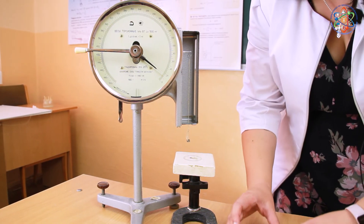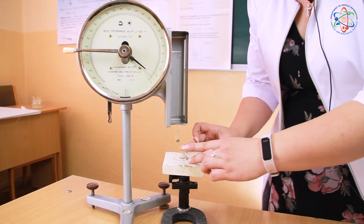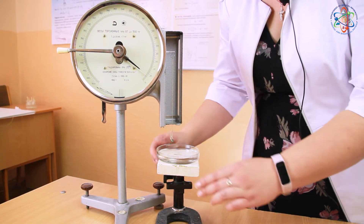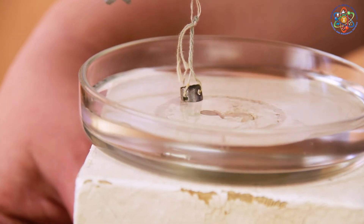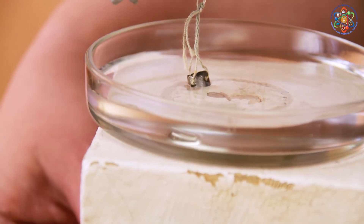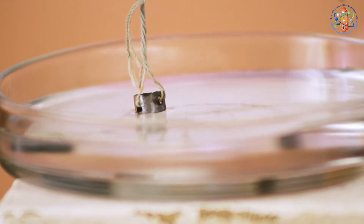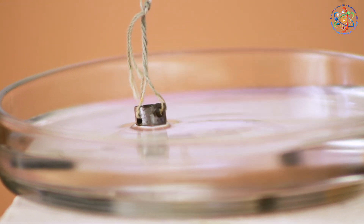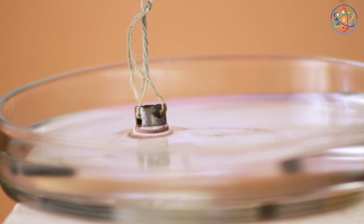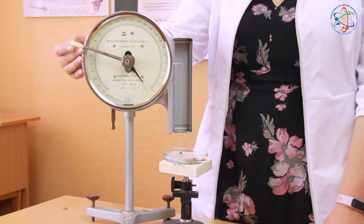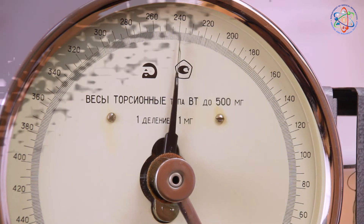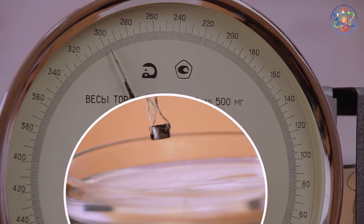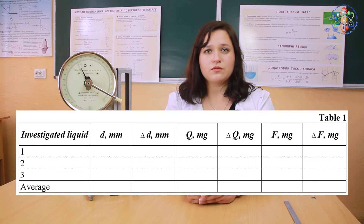After that, we place the cup with the study liquid on the moving platform. Slowly turning the screw, we dip the ring into the liquid. Next, we slowly lower the platform until the moment a so-called surface overstretching is reached. With the help of the balance, we slowly change the exerted force and record the moment of pull-off of the ring from the liquid surface. We repeat the measurements three times and then tabulate the results.